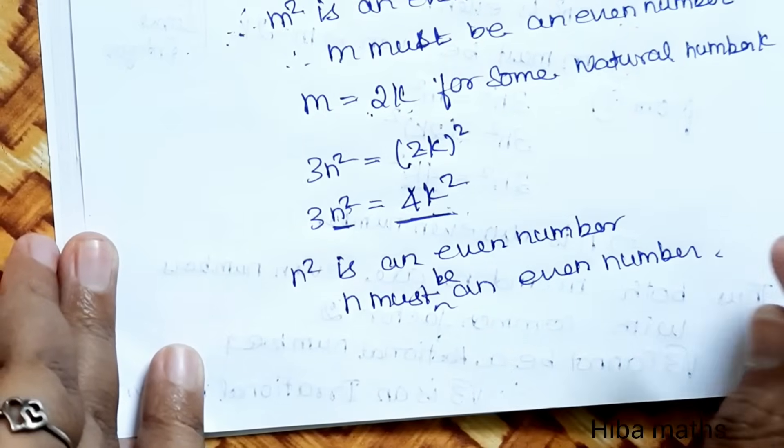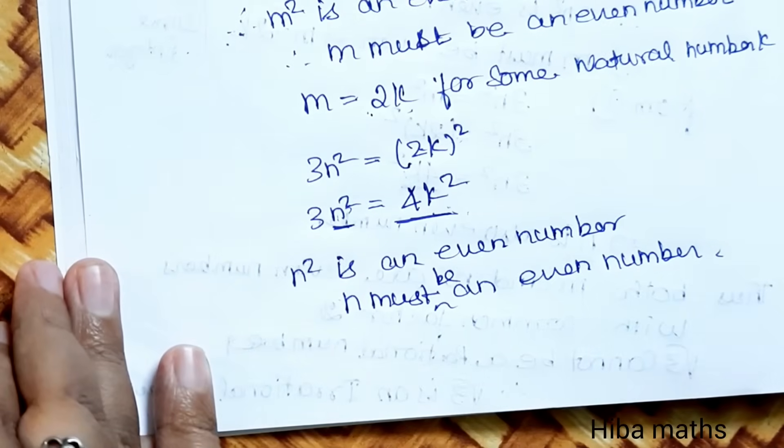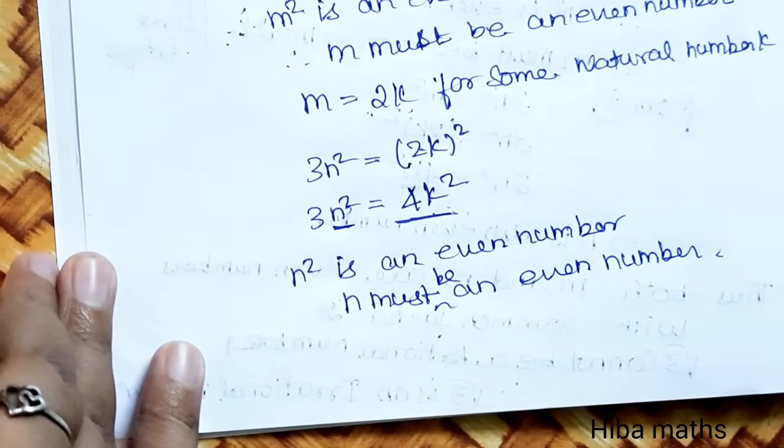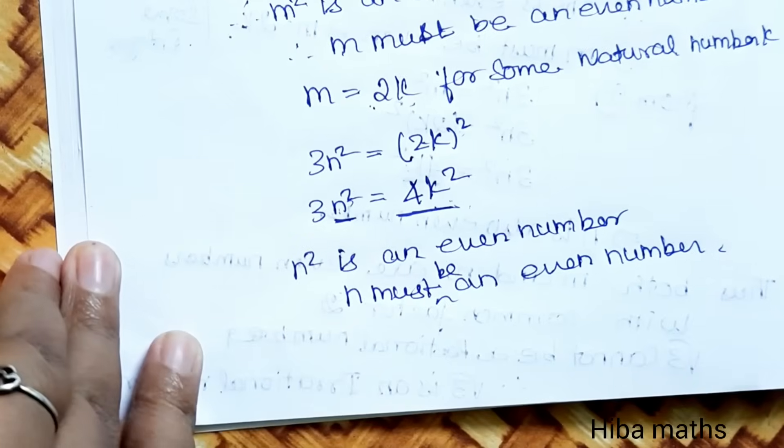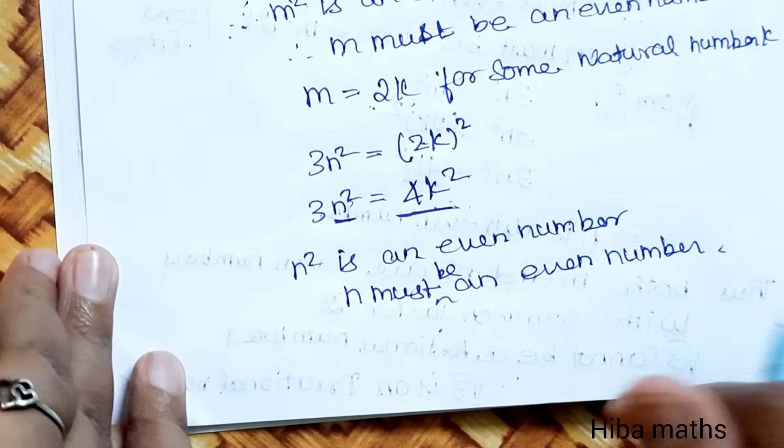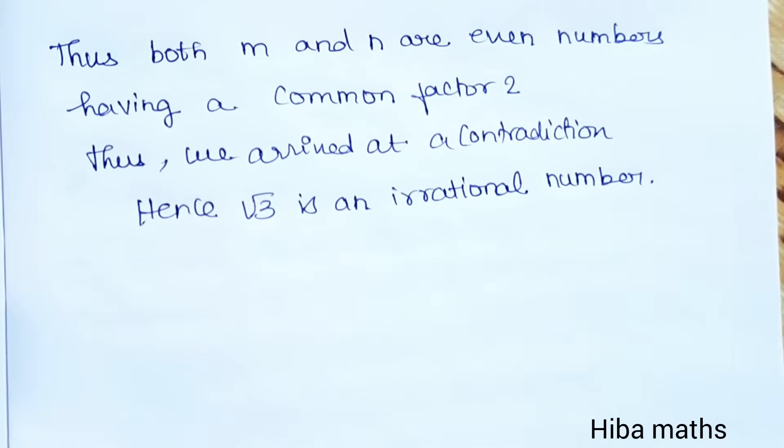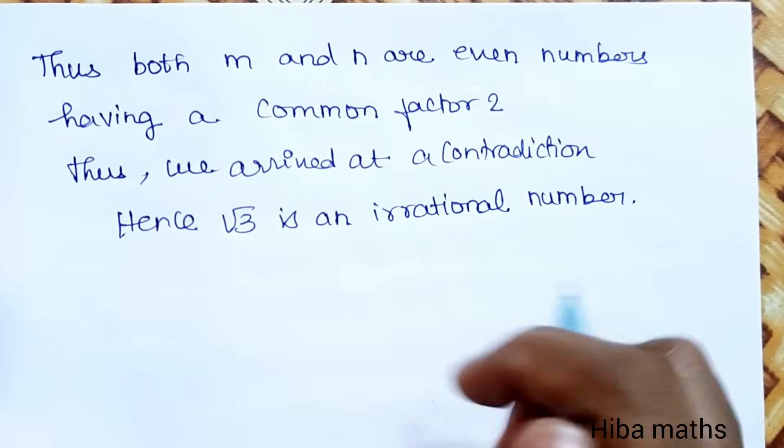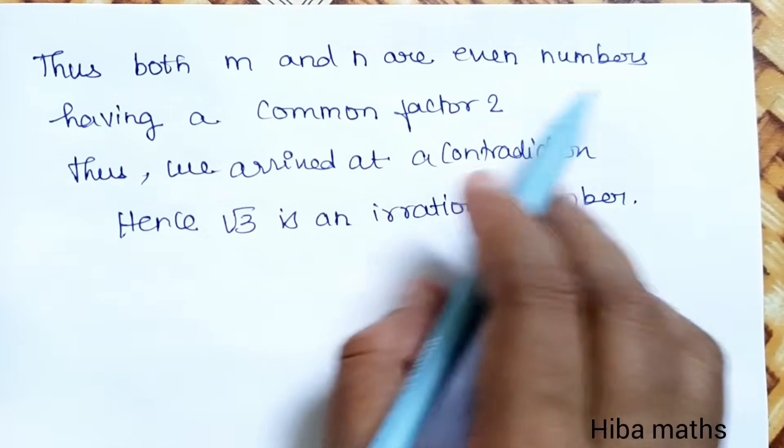So N square is an even number. N square is even, N must be an even number. Now, N and M both equal even numbers. The common factor is 2. But first we assume that M and N are coprime.